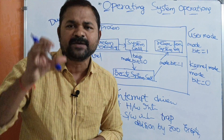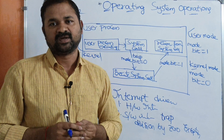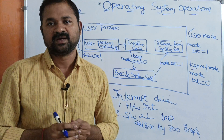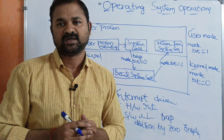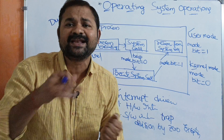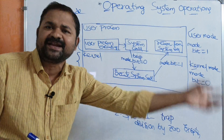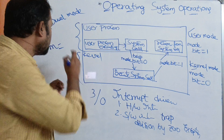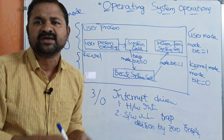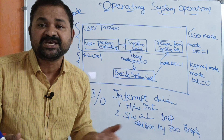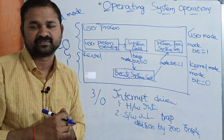Generally, whenever a system is booted — whenever it is turned on — the bootstrap loader program is executed. The bootstrap loader program resides in ROM. Its task is to load the operating system, specifically the kernel, into the main memory. When the bootstrap loader is loading the kernel into main memory, the mode bit is zero. After the kernel is loaded, when the CPU starts executing the user process, the mode bit changes from zero to one.